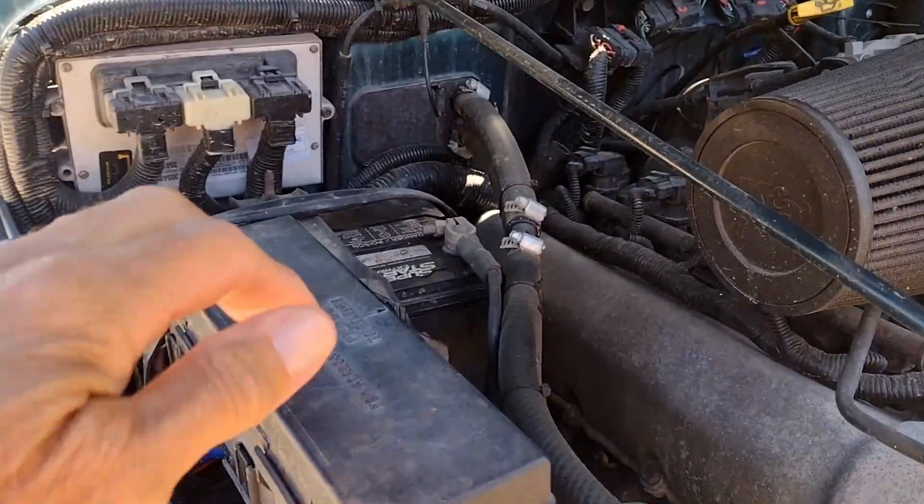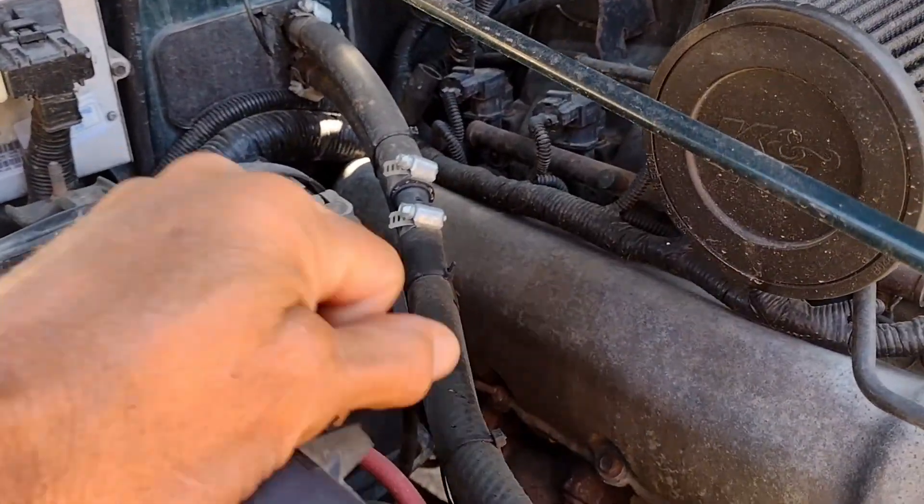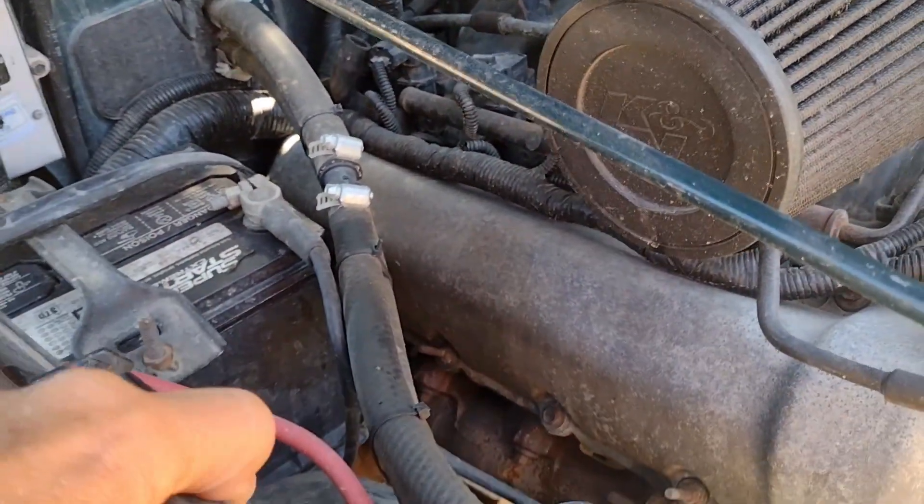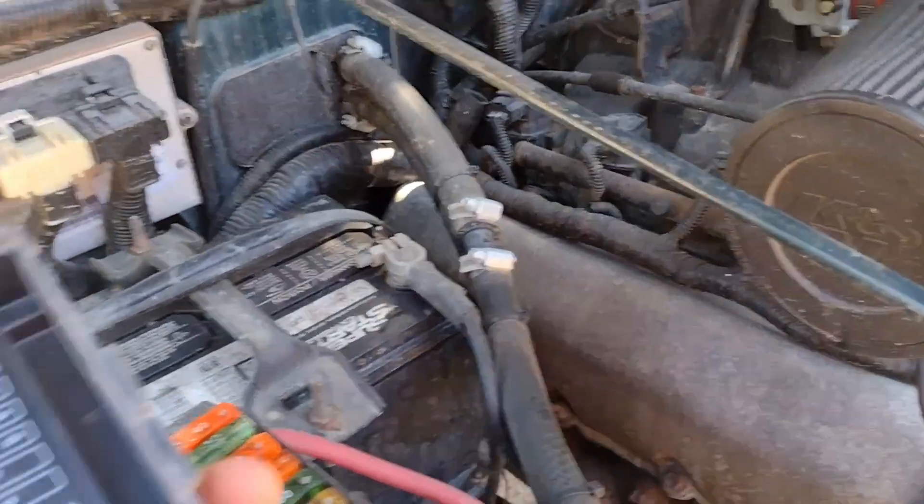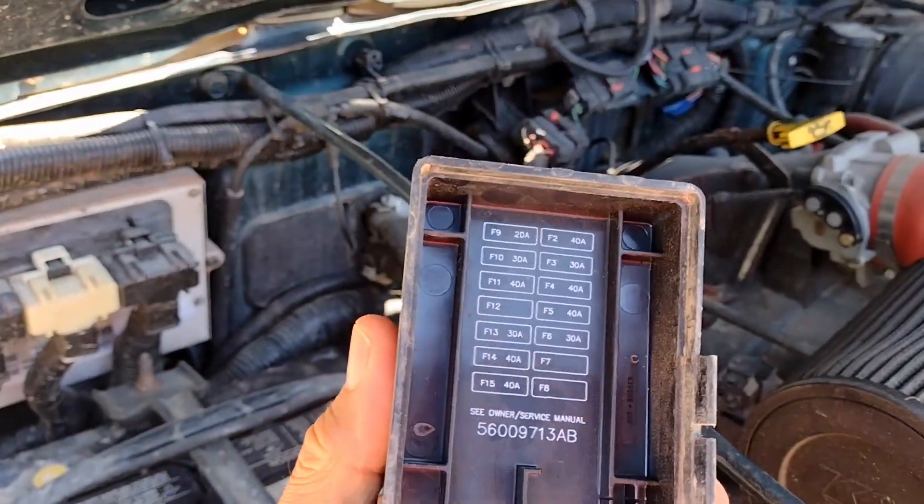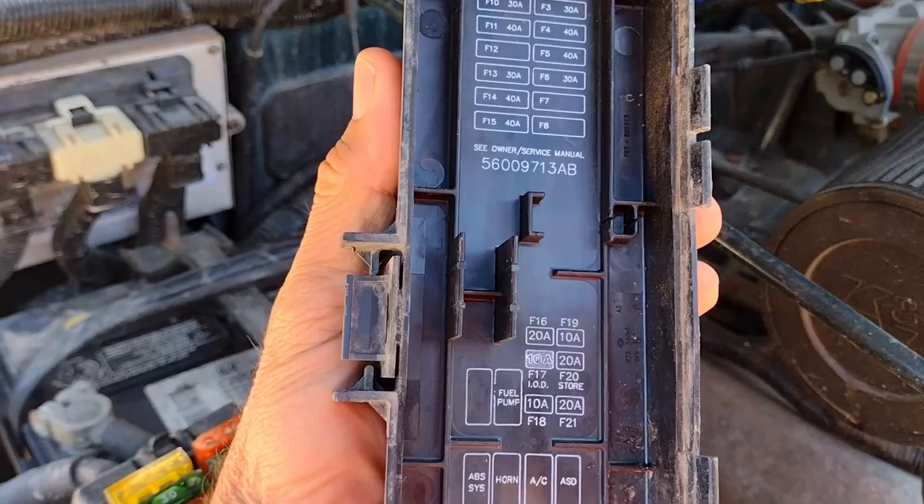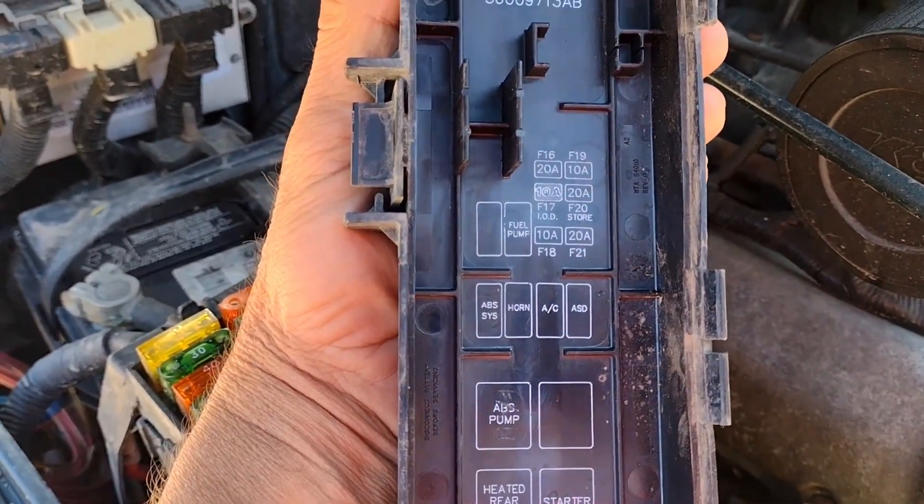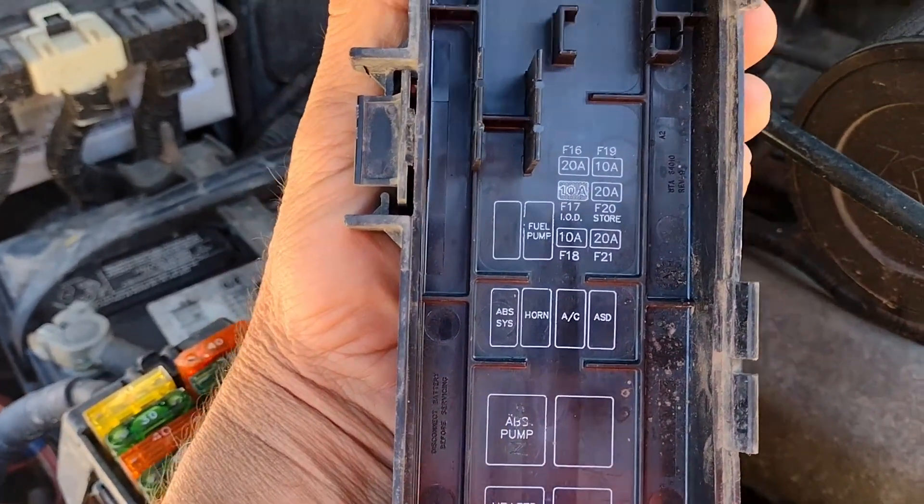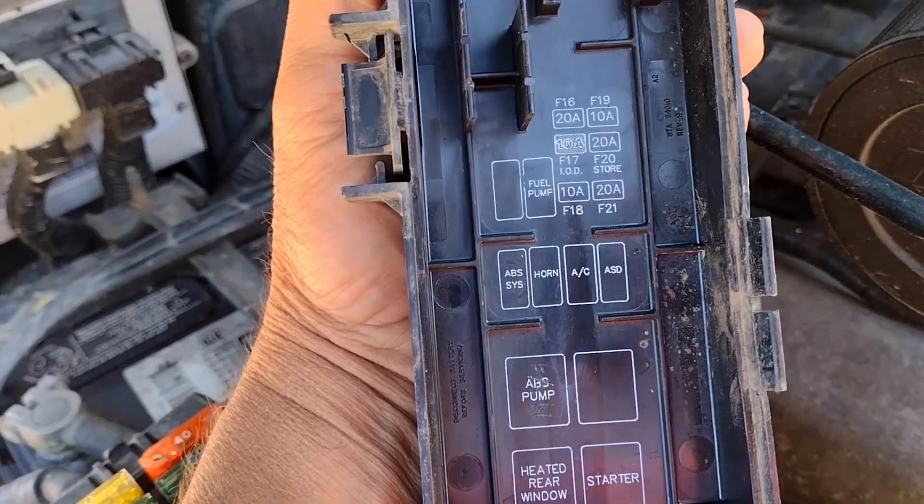Let's take a minute and look at the auto shutdown relay. You're going to open your fuse box and go to your legend. If you follow your legend down, you're going to see a diagram of the relays that are contained inside the fuse box.